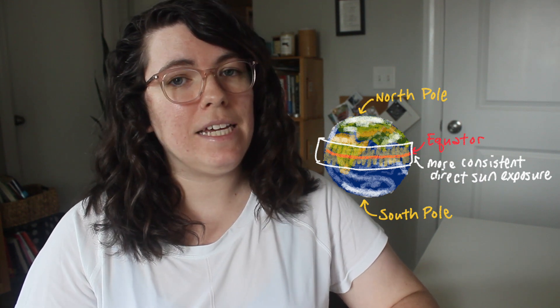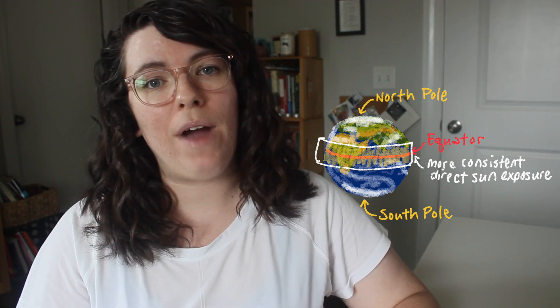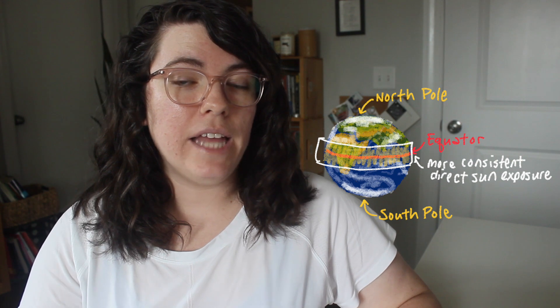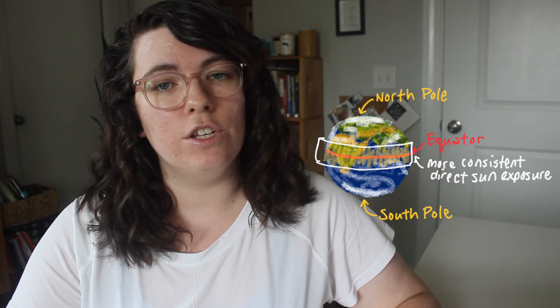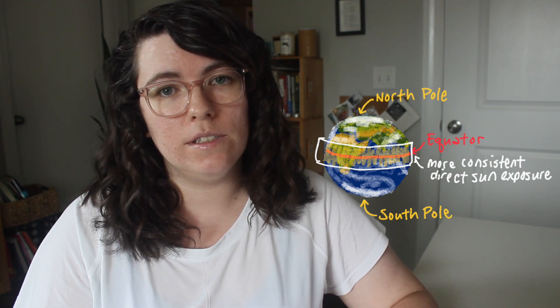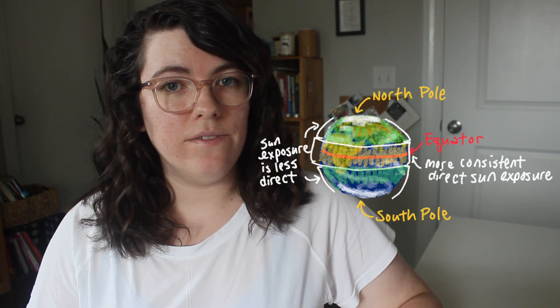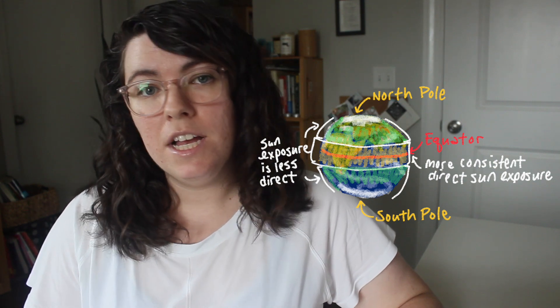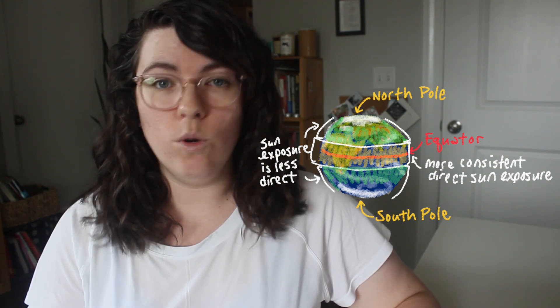Differences in climate are caused by the uneven and changing exposure to the sun's rays that different parts of the earth receive. The equator, which is in the middle of the earth, receives the most direct and consistent sun exposure throughout the year. That's the reason that equatorial locations are consistently warmer than locations closer to the northern and southern poles, since those locations receive less sun exposure and are on average colder.